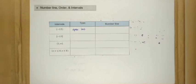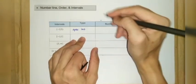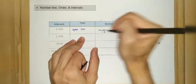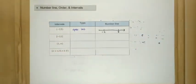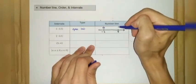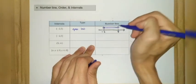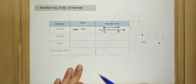For the number line representation, it starts with negative 2 and ends with 5. Both endpoints are not included in the interval, so we denote them with empty dots. It takes values from negative 2 up to 5, but the endpoints are not included.